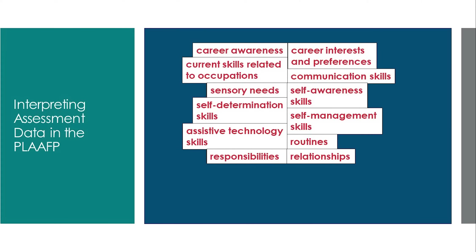Additional areas to include are communication skills or sensory needs, self-awareness, self-determination and self-management skills, assistive technology skills, and routines, responsibilities, or relationships. Information could come from the student, his or her parents and family members, and other stakeholders such as teachers, related service providers, or agency supports. If we don't include critical data-based information from all areas, we risk an incomplete picture of the student — missing important strengths or areas that must be addressed. We also need to use this data to help prioritize areas that need to be addressed more urgently than others.